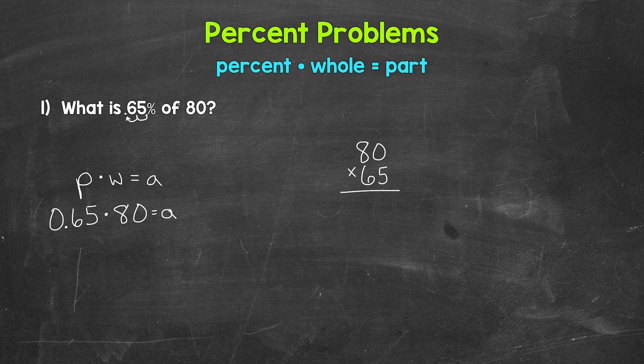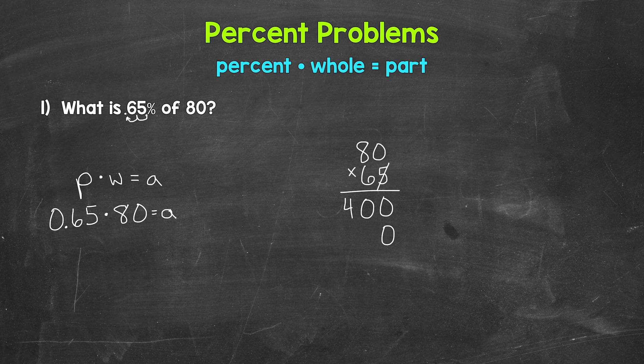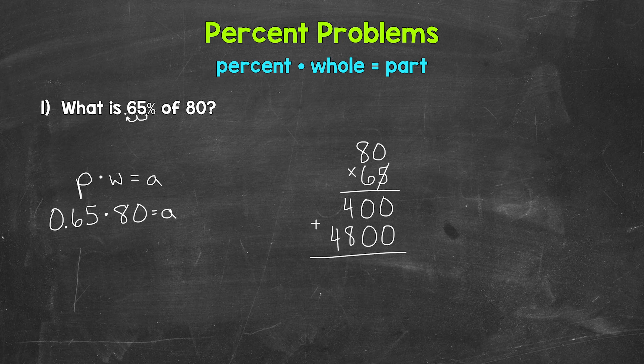Either way will work though. Now let's multiply. 5 times 0 is 0. 5 times 8 is 40. We are done with this 5 and we are moving over a place to the 6. So we need a 0 here. And now we do 6 times 0, which is 0. And then 6 times 8, which is 48. And now we can add. 0 plus 0 is 0.